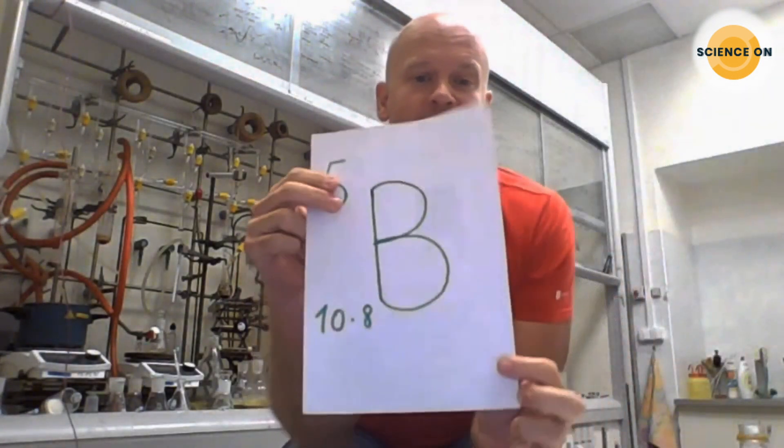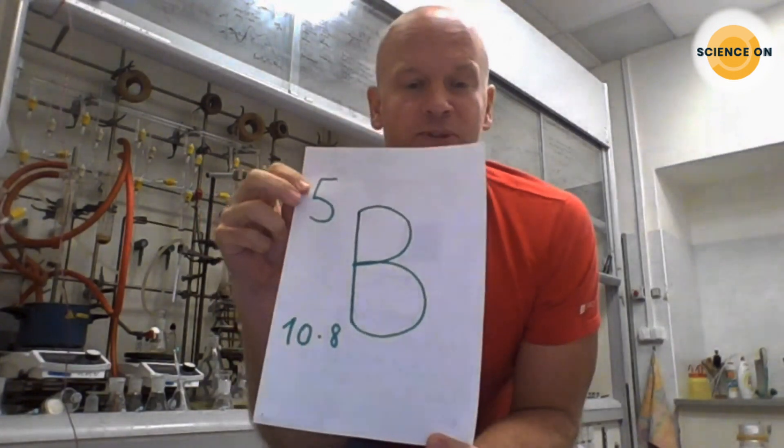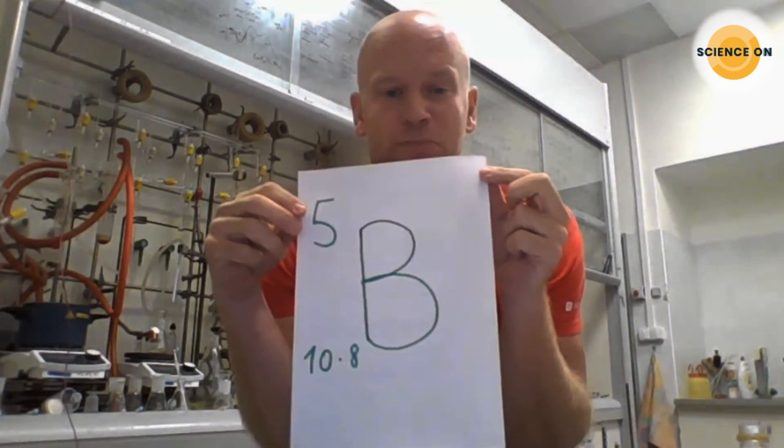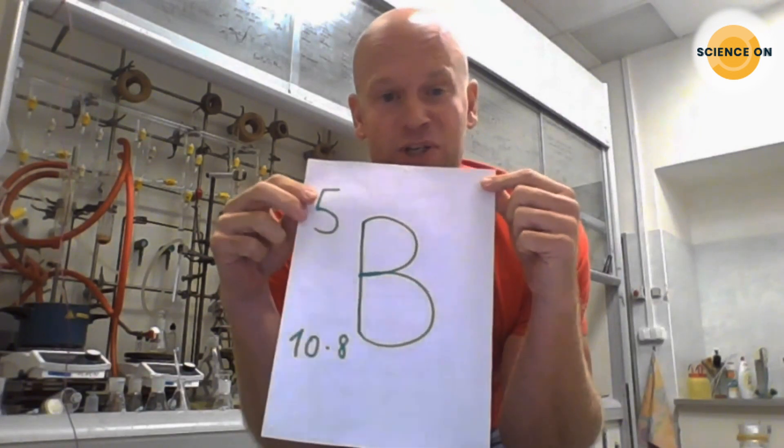I'm going to talk to you about my favorite element of all the possibilities from the periodic table. My personal favorite is actually the element next door to carbon, and that's boron. You can see the two important numbers associated with boron.